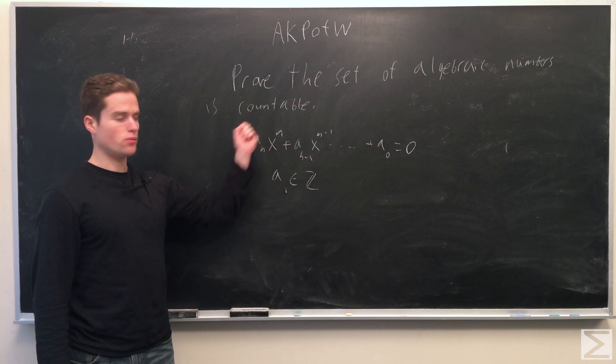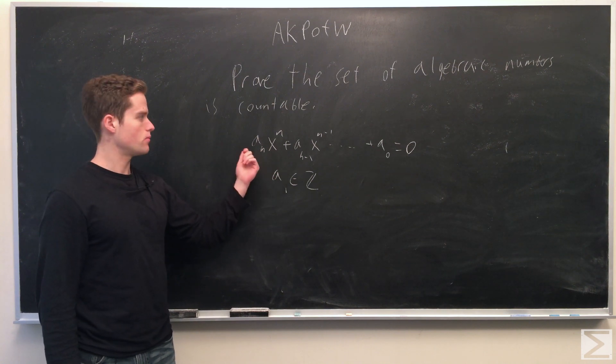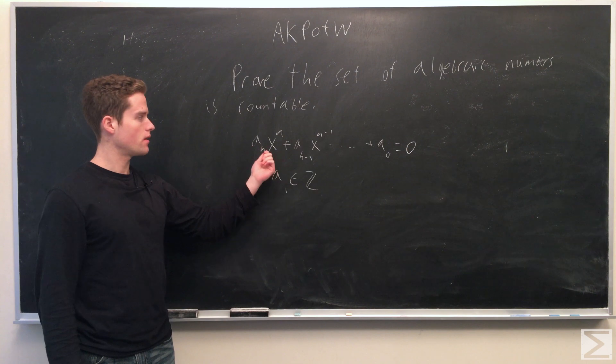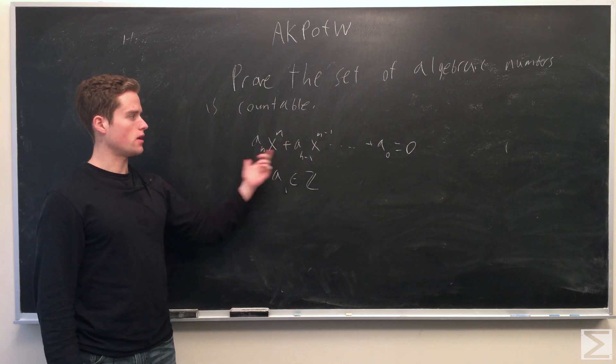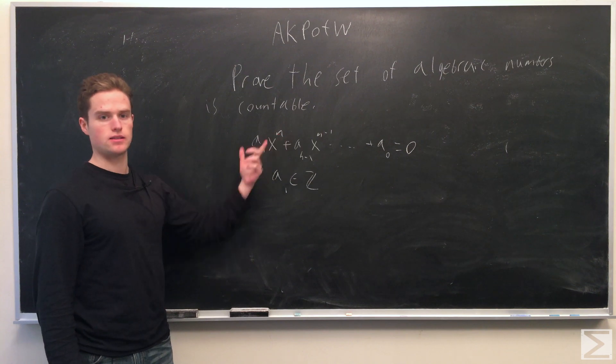To prove that this set is countable, what we're going to do is take an arbitrary polynomial where a_n x^n where a_n is not 0, and we're going to prove all polynomials of this form where given some n is a countable set.